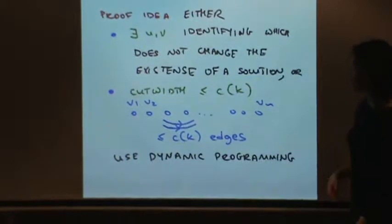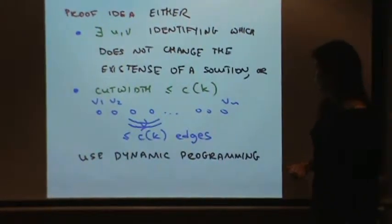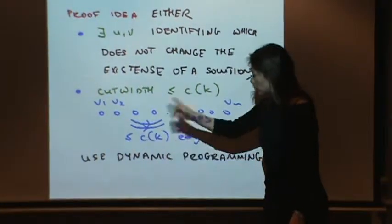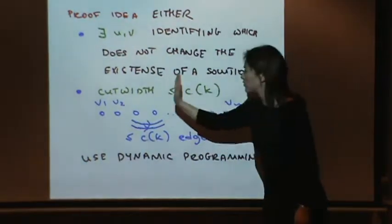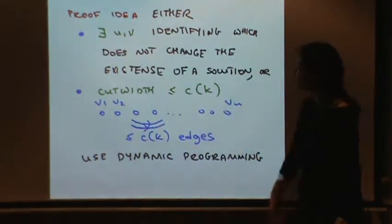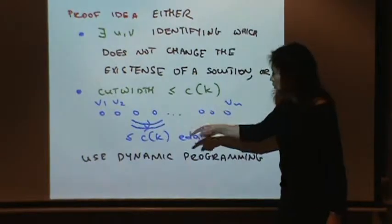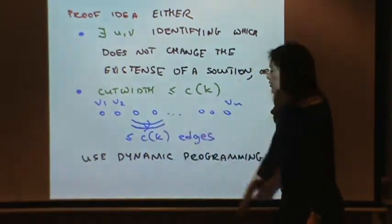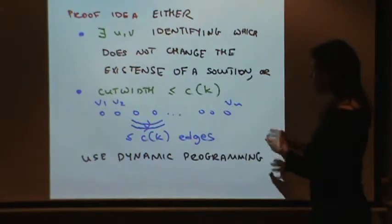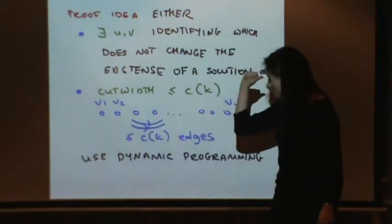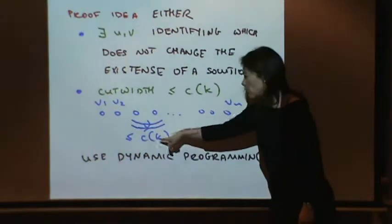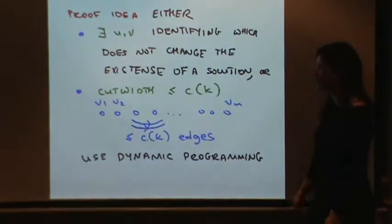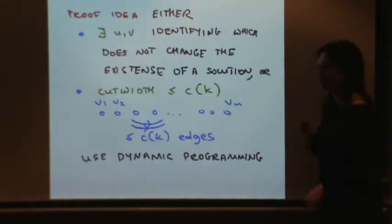What's cut width? I want to order the vertices of my tournament and I want to count how many edges cross different cuts. I can look at different gaps in the order and I want to know how many edges go this way across this gap. That's cut width.